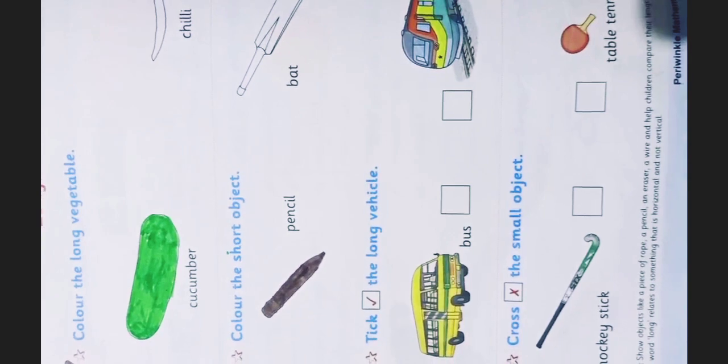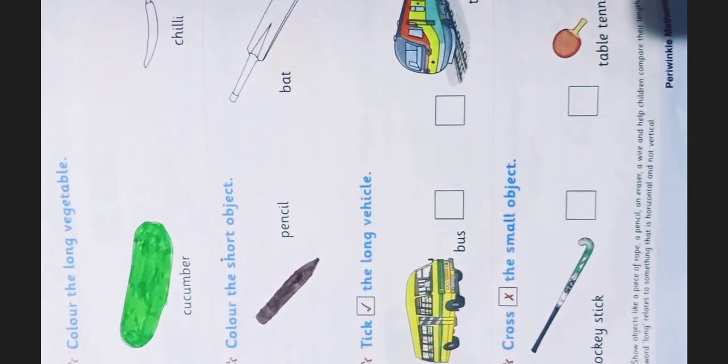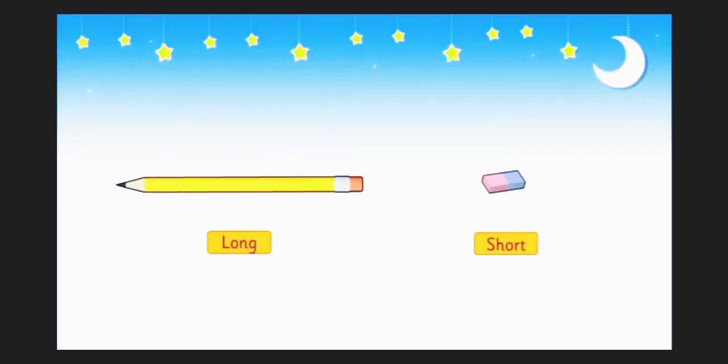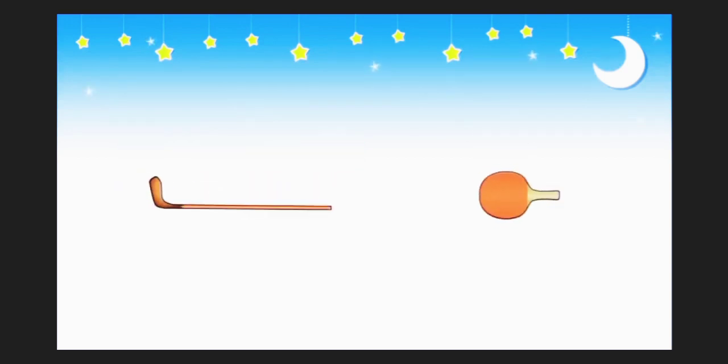For example, see student. As we compare the length of pencil and eraser, we find that pencil is long in length. Pencil is long and eraser is short in length. Similarly, a hockey stick is long length and the table tennis bat is short in length.